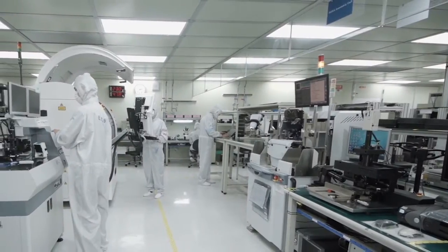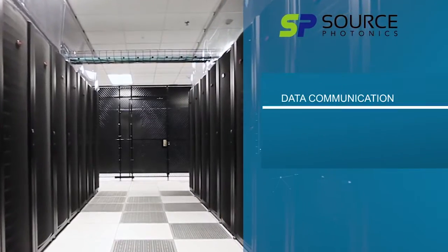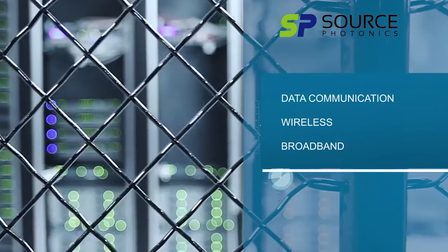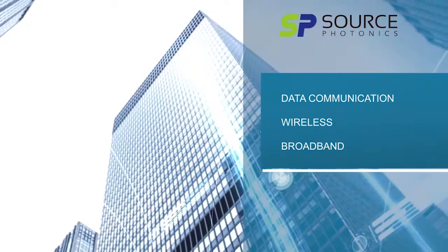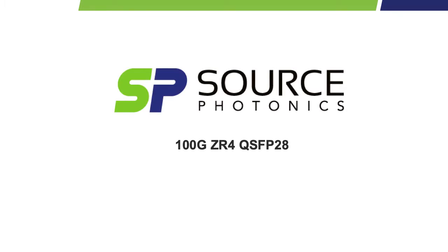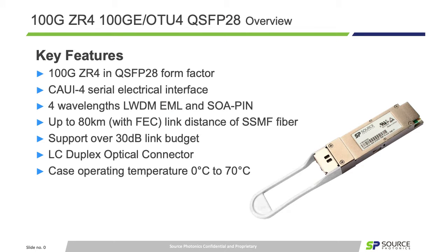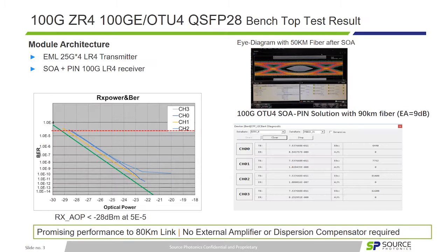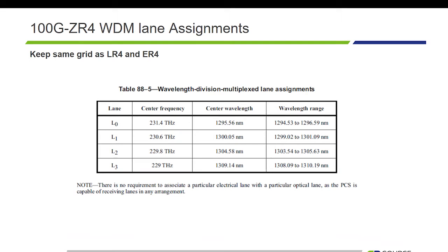Source Photonics is a leading supplier of optical connectivity products for datacom, telecom, and access applications. We are demonstrating our 100GB ZR4 QSFP28 transceiver which operates with 4 parallel NRZ data streams of 25.78 Gbps, providing an aggregated signaling rate of 103.125 Gbps for 100GB Ethernet.